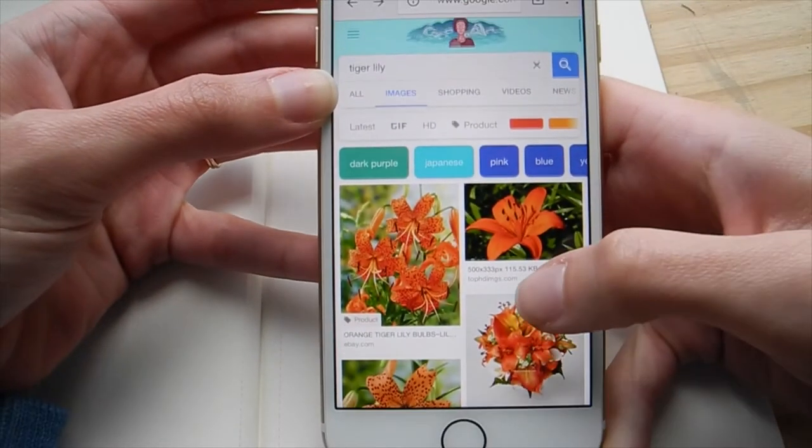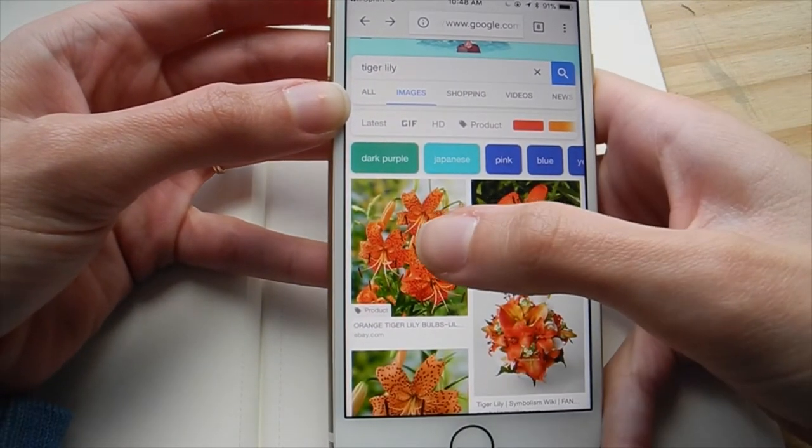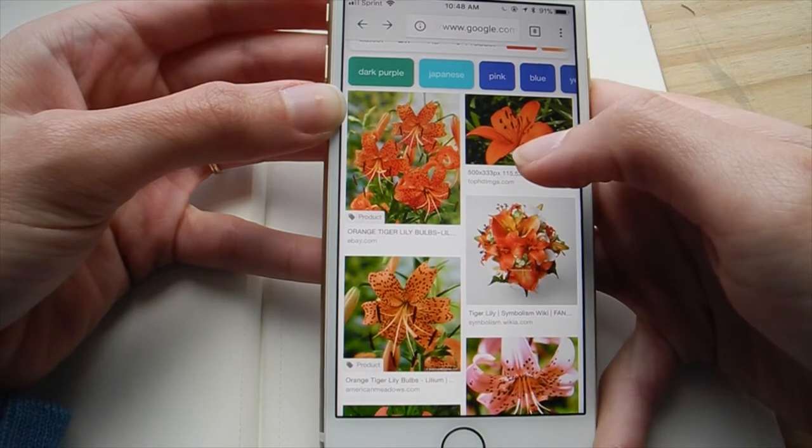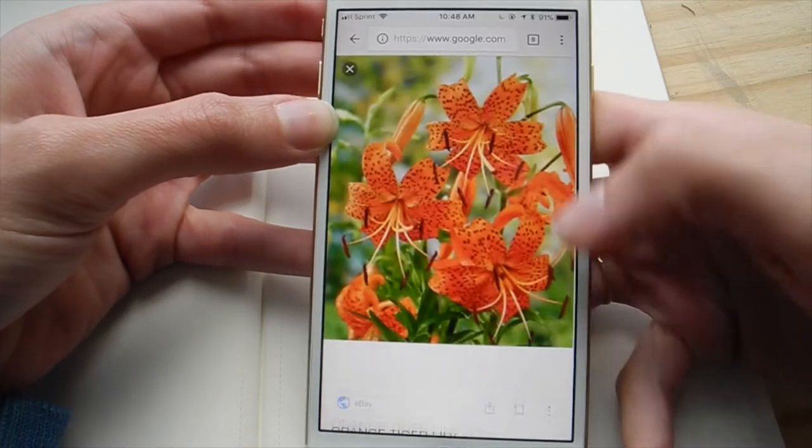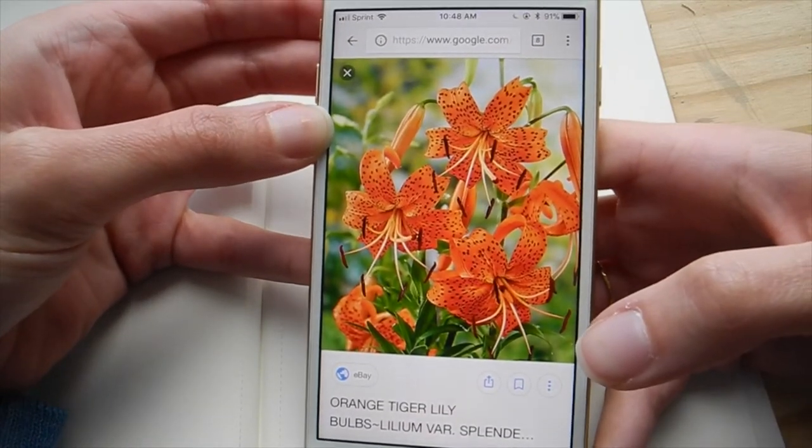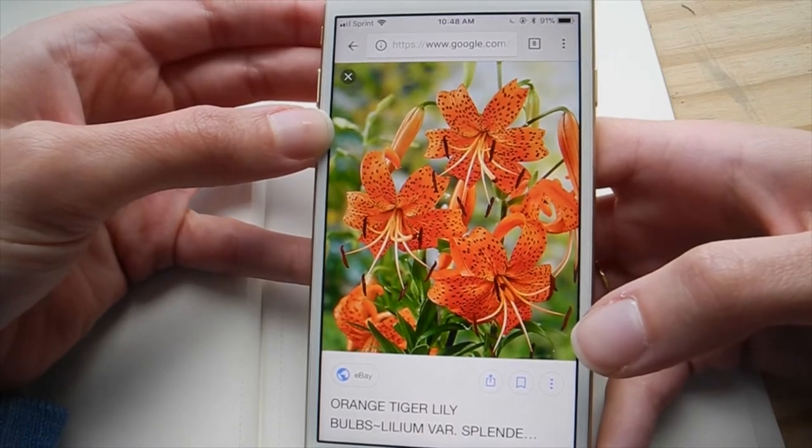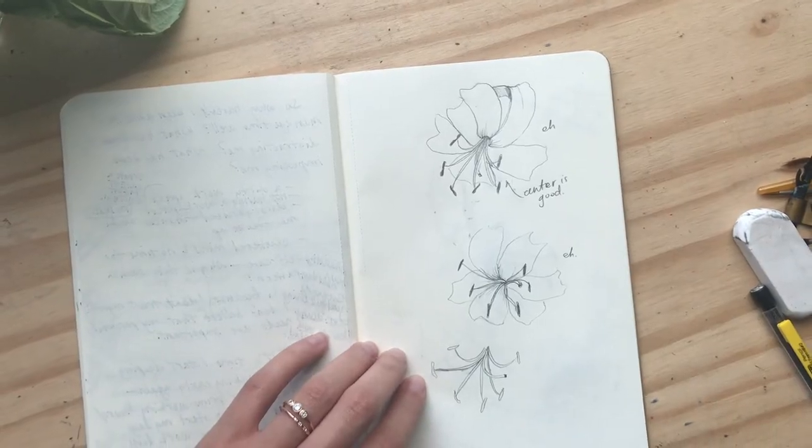This tiger lily. So there are two different kinds that I've seen, like I was saying earlier. One kind looks like this and it's kind of like, I think that's the Asian kind. And I tried drawing it and it just wasn't happening for me.